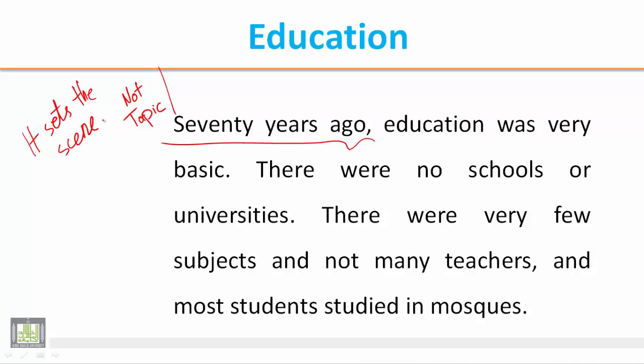In other words, it just tells you when this happened. But if you continue to read — 'education was very basic' — the topic is about education in the past. So the topic is 'education in the past.' We call this an introductory phrase — عبارة ابتدائية أو استهلالية.